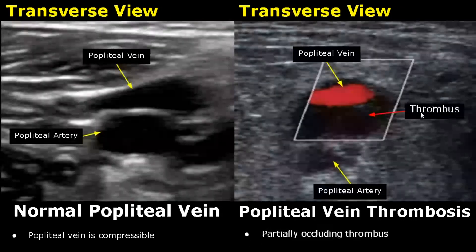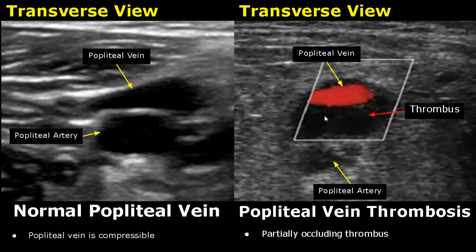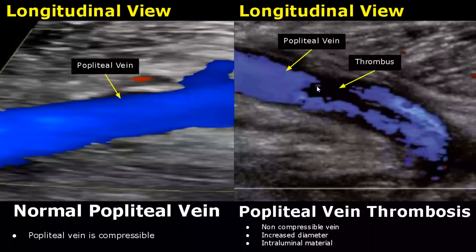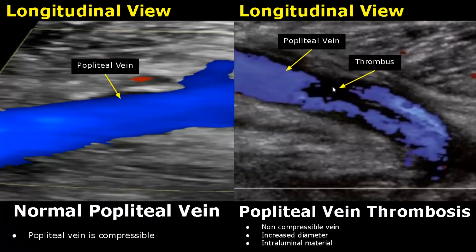In this image we can see partial occlusion of the vein due to thrombosis. Only this part of the vein has blood flow and no flow is seen over here. In this longitudinal view, we can see the partial occlusion more clearly.